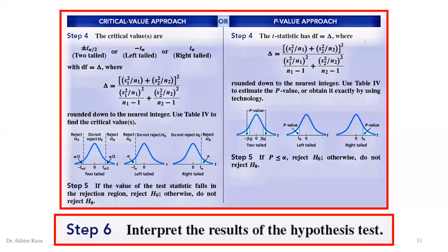In the p-value approach, the degrees of freedom formula is the same. You calculate the degrees of freedom, then look up the t-statistic in the t-table to obtain the p-value. The null hypothesis H0 is rejected if the p-value is less than alpha.